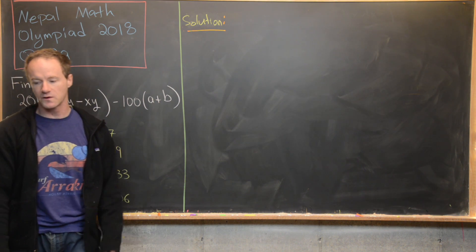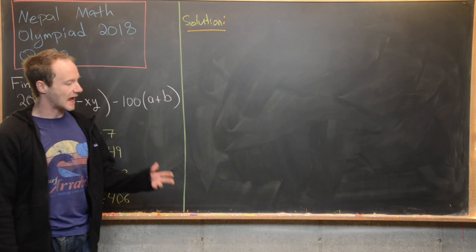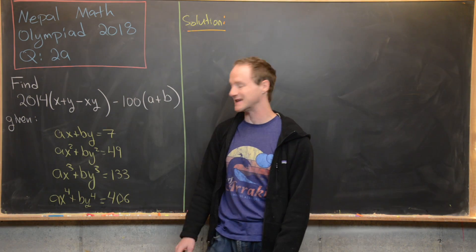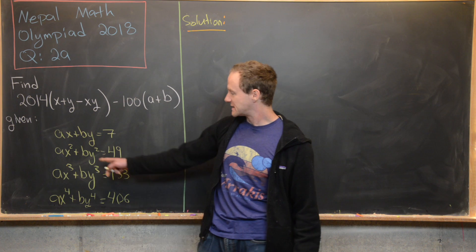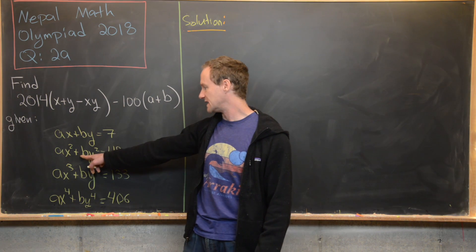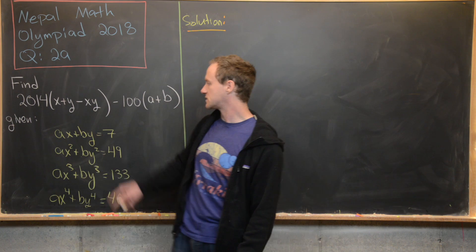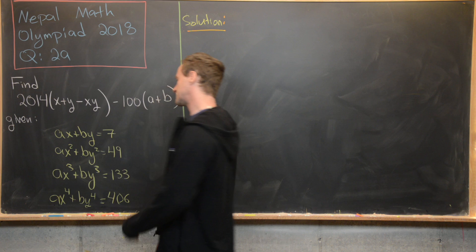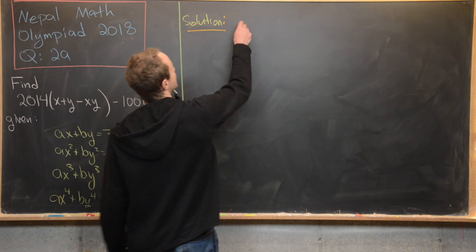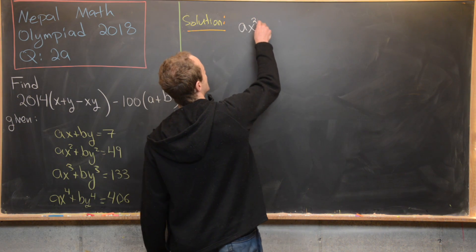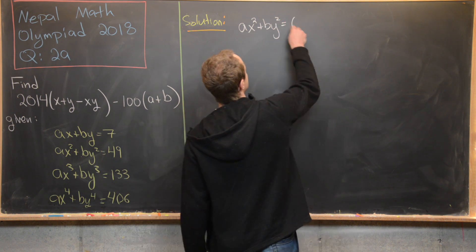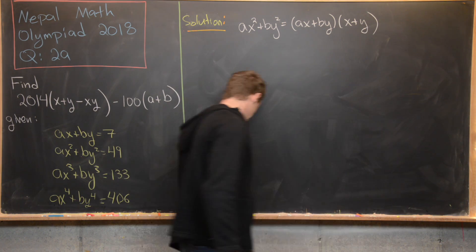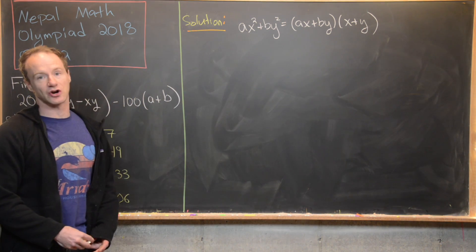Now we're ready to jump into a solution, starting with the first hint — writing the given equations in terms of each other. Notice that the left-hand side of the second equation can almost be built from the first if we multiply ax + by by x + y. So let's observe: ax² + by² equals (ax + by)(x + y), but this product picks up some extra cross terms.